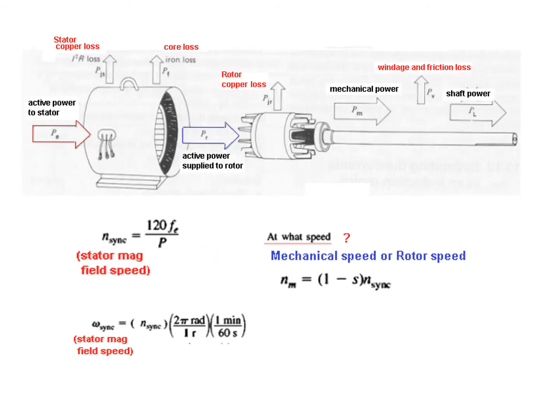If you recall this diagram we studied earlier, this is the stator and this is rotor and this is shaft here. When we talk of the synchronous speed n_sync, that means it is the speed of the stator magnetic field. This will be fixed and it is given by 120 multiplied by frequency, line frequency 50 hertz, divided by p number of poles. So this is the stator magnetic field.